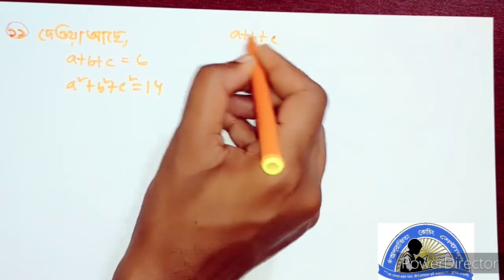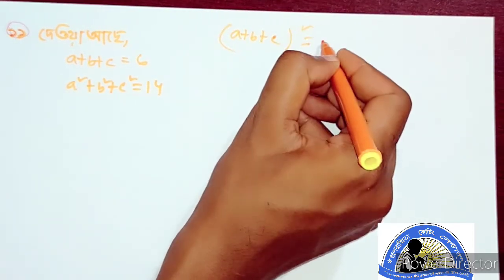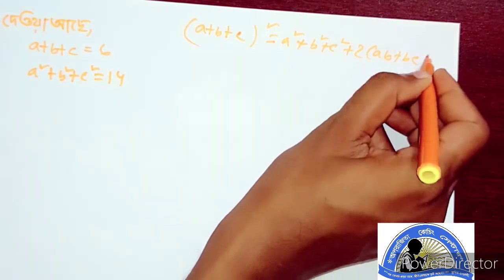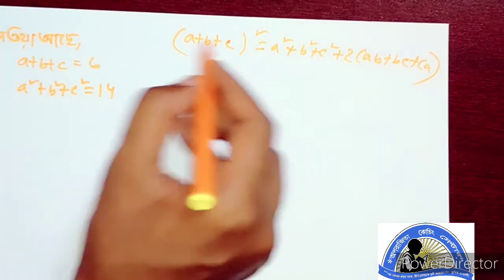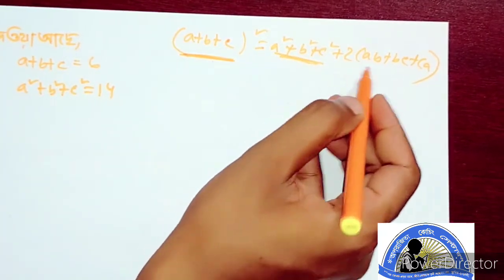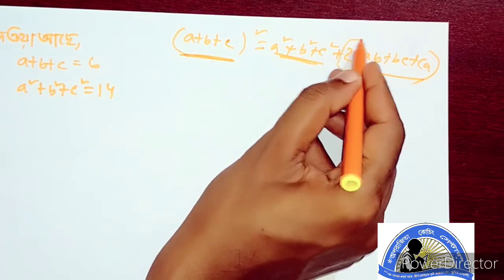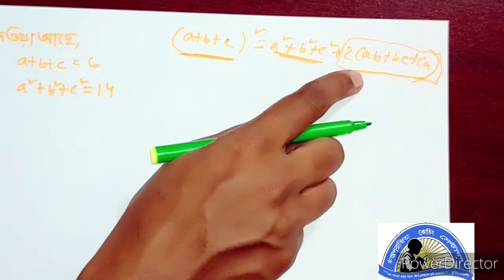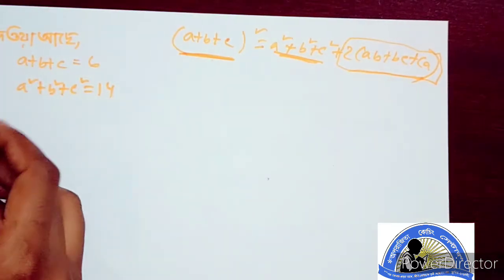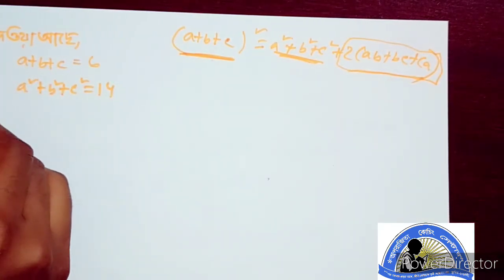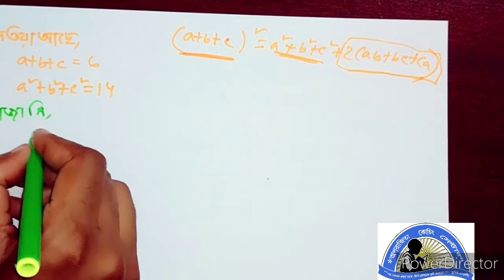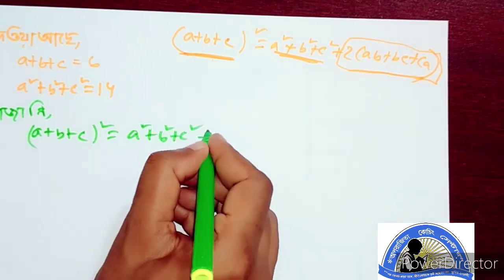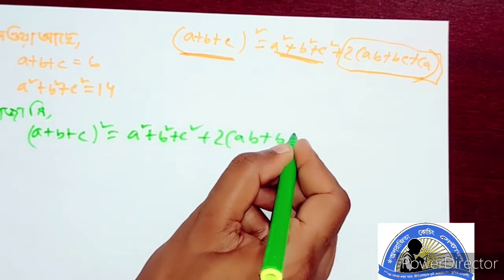We know that a plus b plus c whole squared equals a squared plus b squared plus c squared plus 2 into ab plus bc plus ca. The point is that a plus b plus c is expanded by squaring, so the whole square is a squared plus b squared plus c squared plus 2 into ab plus bc plus ca.